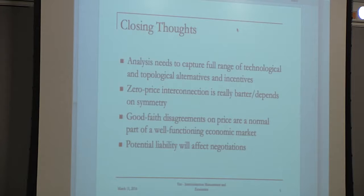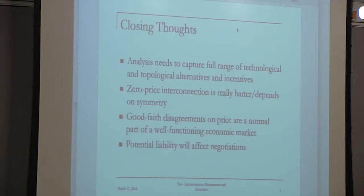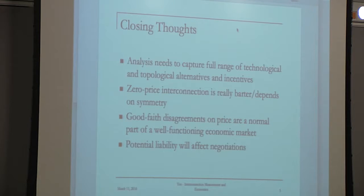My closing thoughts: we need to think about this not just in terms of the congestion state of one particular ISP or link — that's critical, but we have to move beyond that. To understand the economics of this, put yourself back in the decision-making position of the person trying to decide whether they're going to provision a transit link and how much they're willing to pay. Look at the full range of alternatives — topologically, architecturally, whether you're going to use storage or otherwise.